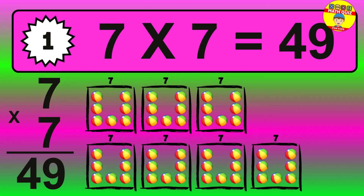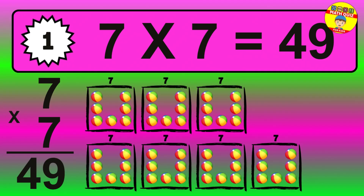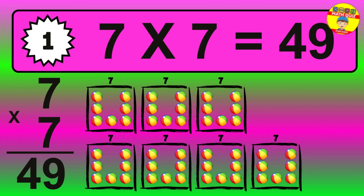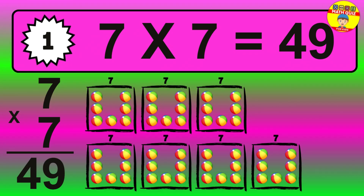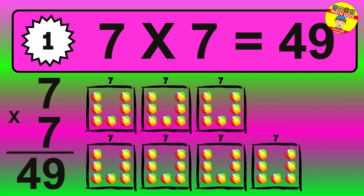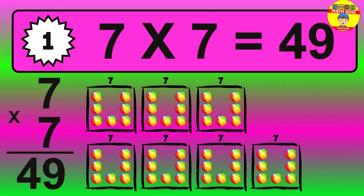The answer is 7 times 7 is 49. To calculate, we have 7 groups with 7 balls each one. So, how many balls do we have? 49 balls.